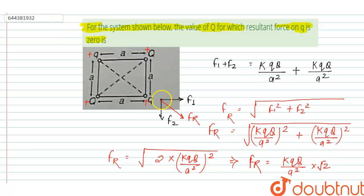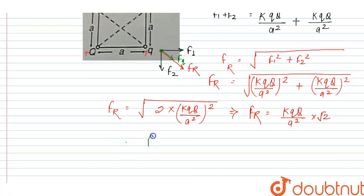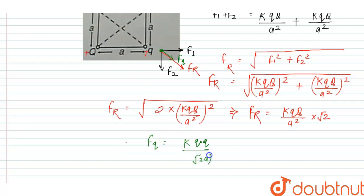Due to the small charge q placed diagonally, the force Fq acts in the opposite direction. The distance between the two small q charges is the diagonal of the square, which equals root 2 times a. Therefore, Fq equals k times q squared upon 2a squared.